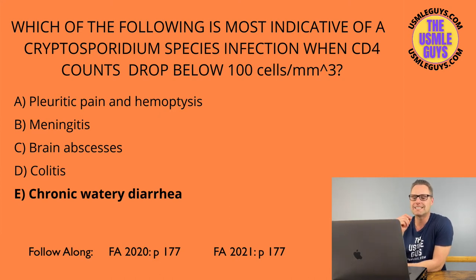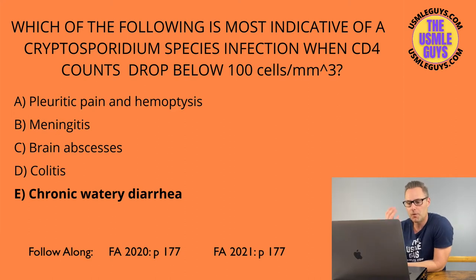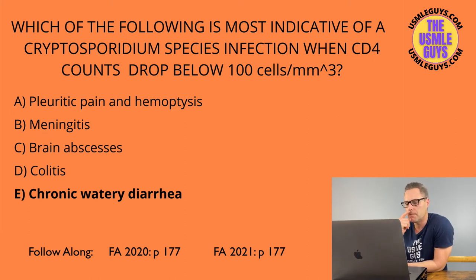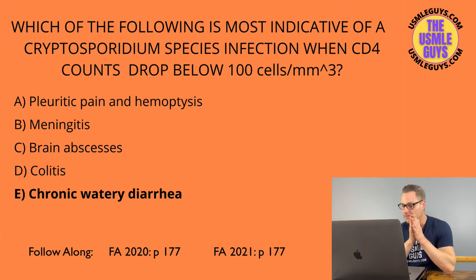Cryptococcus neoformans can cause meningitis. Remember, it has a thick capsular antigen, so we use the India ink stain to identify it — it's a yeast. Cryptosporidium presents with chronic watery diarrhea and acid-fast oocysts in the stool.